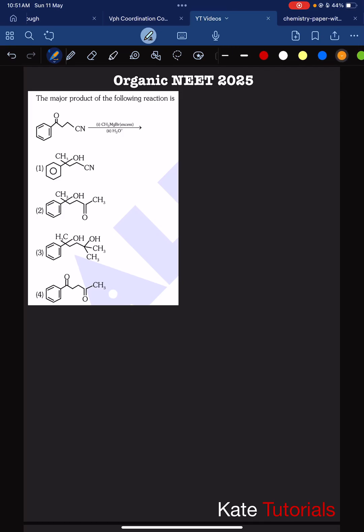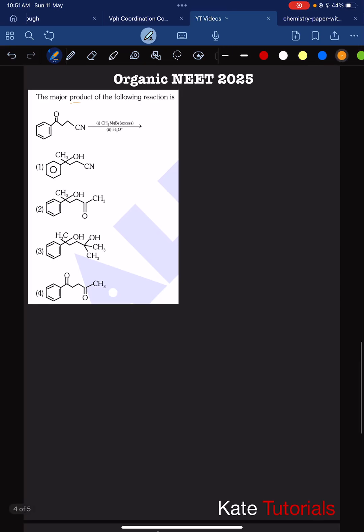Hello everyone, welcome to this question. The major product of the following reaction is what they are asking. Let me write the structure. We have a benzene ring here, and here we have C double bond O, CH2, CH2, C triple bond N.